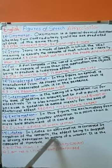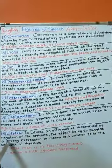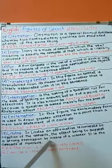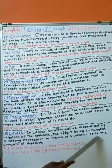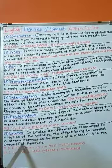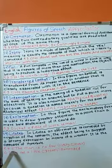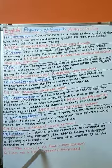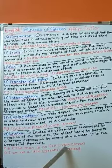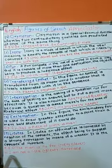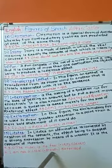Litotes: by means of a weaker expression, it is the opposite of hyperbole. For example, the man is no fool - it means he is very clever. Second example, I'm not a little - it means I'm very great.